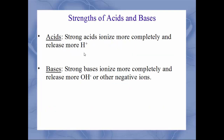Stronger acids ionize more completely and release more hydrogen ions. Stronger bases ionize more completely and release more hydroxide ions (OH−). The key distinction: acids release hydrogen ions, while bases release hydroxide ions.